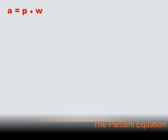We just did a problem where we solved for A: A equals P times W. Now let's try some problems where they're asking a different question — maybe asking for the percentage, or maybe asking for the whole. If they tell you two of the three values, you can solve for the third. It's algebra. Let's try one: 1.5 is what percent of 25? What I'm looking for is P. I can see that 1.5 is the portion and 25 is the whole.